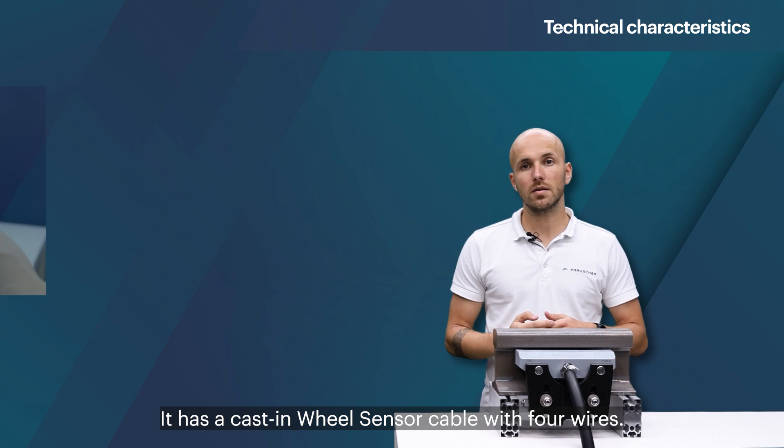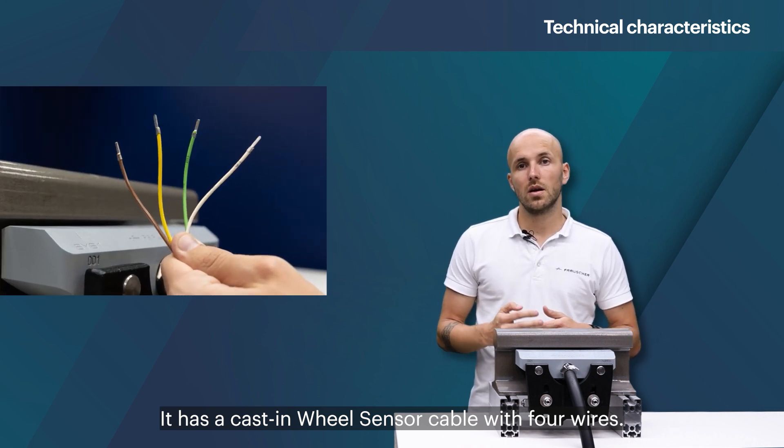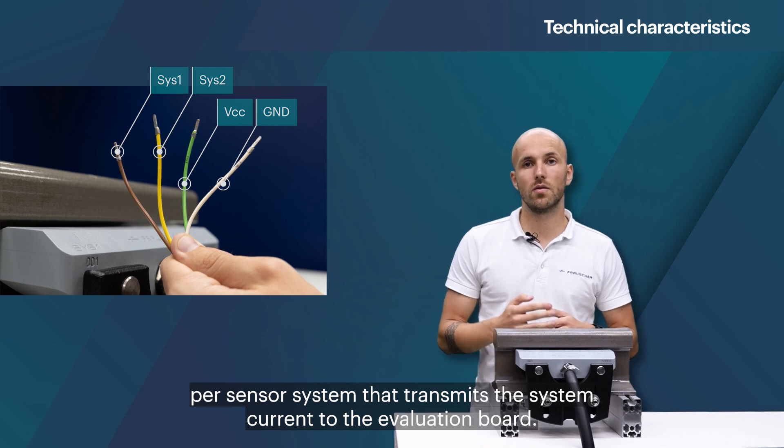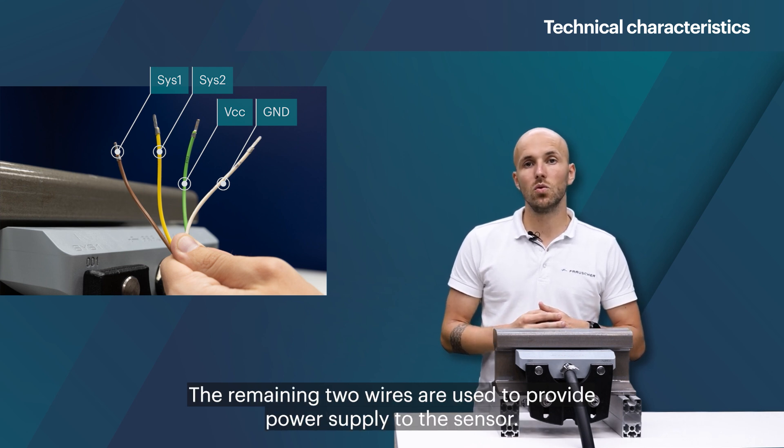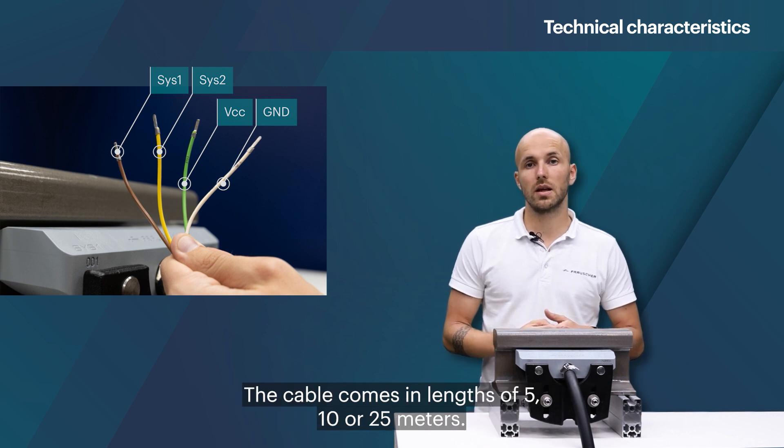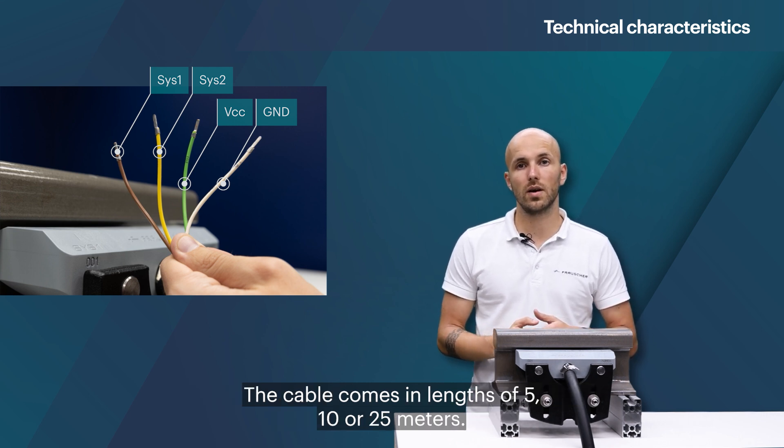It has a cast-in wheel sensor cable with four wires. There's one wire per sensor system that transmit the system current to the evaluation board. The remaining two wires are used to provide power supply to the sensor. The cable comes in lengths of 5, 10 or 25 meters.